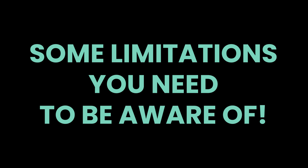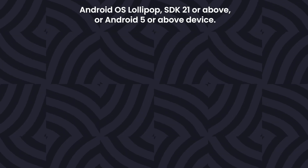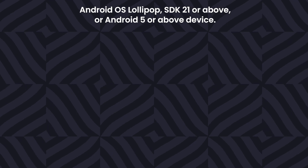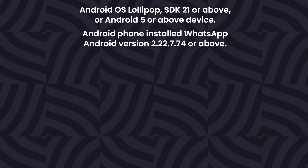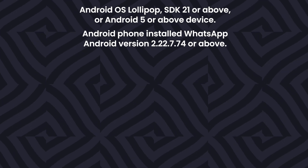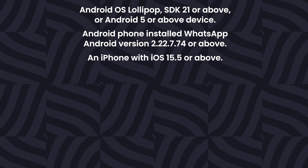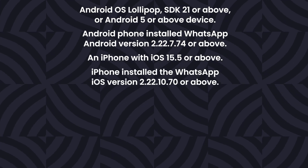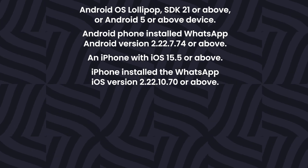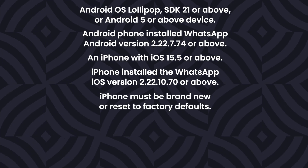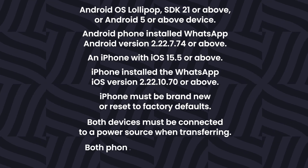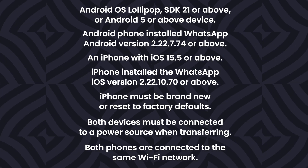However, there are some limitations you need to be aware of. You must be using Android OS Lollipop SDK 21 or above, or Android 5 or above. Your Android phone must have WhatsApp Android version 2.22.0.74 or above installed. You need an iPhone with iOS 15.5 or above, with WhatsApp iOS version 2.22.0.70 or above. Your iPhone must be brand new or reset to factory defaults. Both devices must be connected to a power source and to the same Wi-Fi network during transfer.